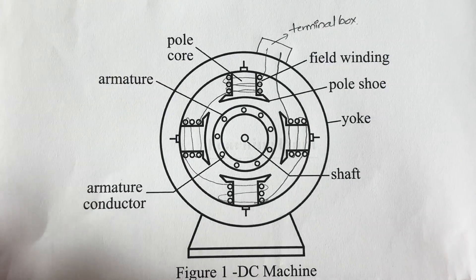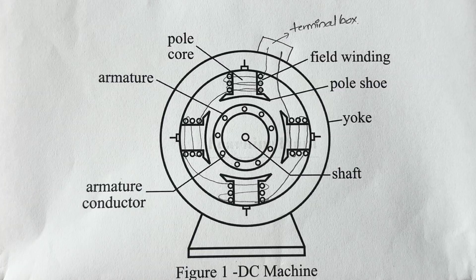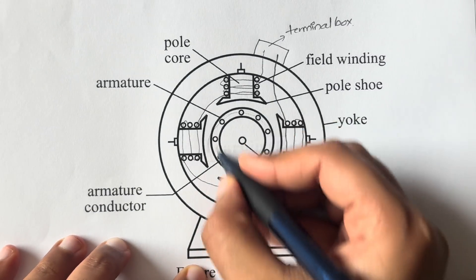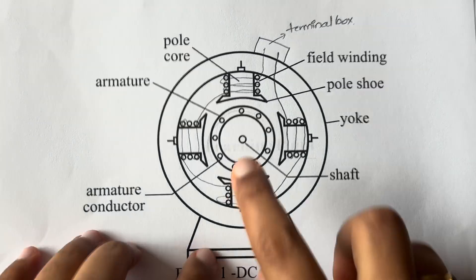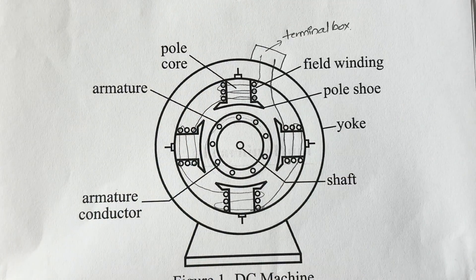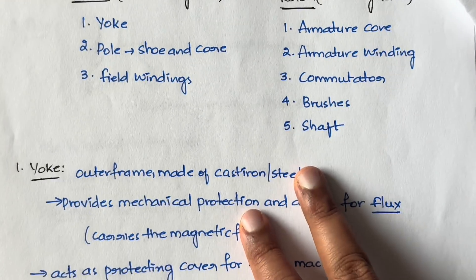Now I'll show you the diagram of the DC machine. In general it will be even more detailed if you search on Google, but I have taken a simple picture so that you can draw it in the exam if you want. This center circular part is the rotating part — imagine it like a tire in a car that always rotates. Everything around it is the stationary part.